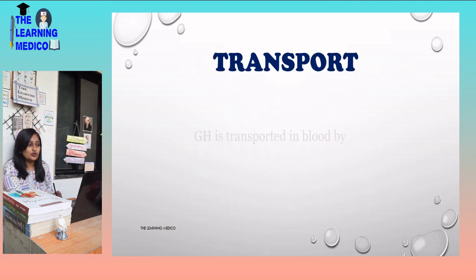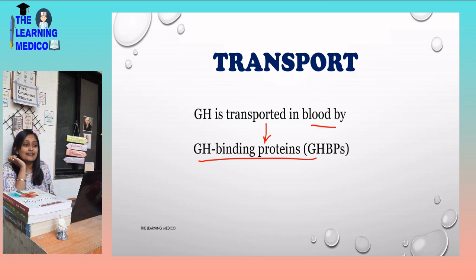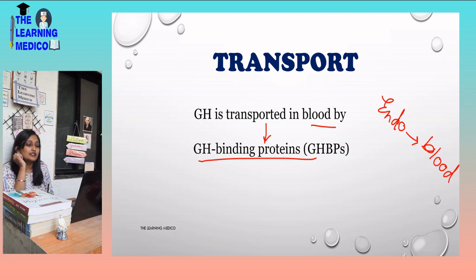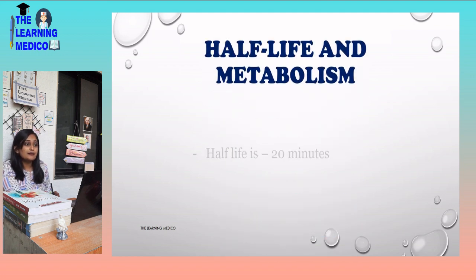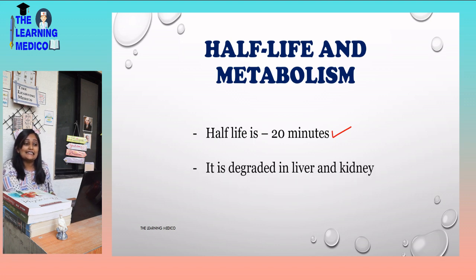Next is the transport. Growth Hormone is transported in blood by Growth Hormone binding proteins. Next is the half-life and metabolism. Half-life is the time period when a particular hormone starts degrading. The half-life of Growth Hormone is 20 minutes only, and it is degraded in the liver and kidneys.